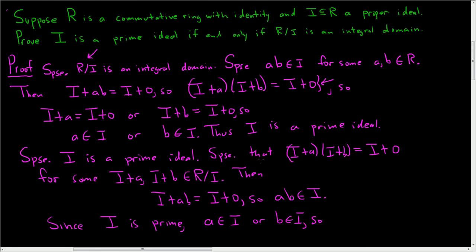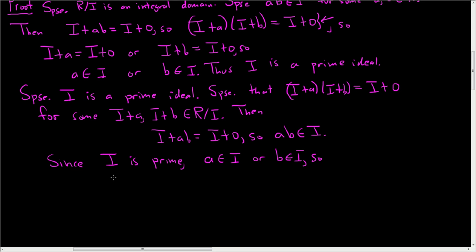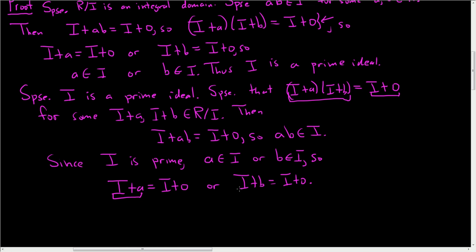In other words, I plus a equals I plus zero, or I plus b equals I plus zero. So we started with the product equal to zero and we showed that at least one of them must be zero. So we've shown that R mod I is an integral domain. Thus, the quotient ring is an integral domain. And that's it!